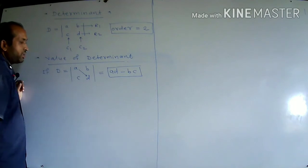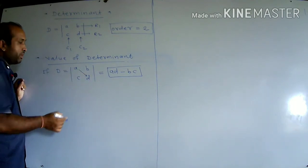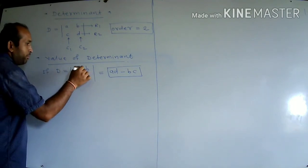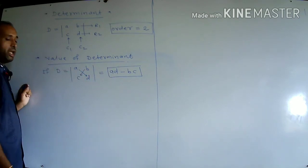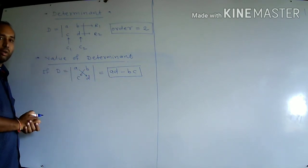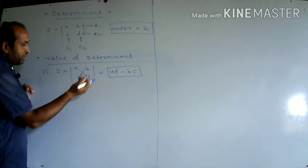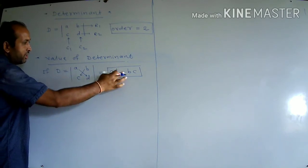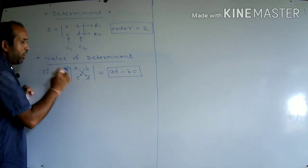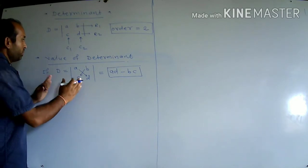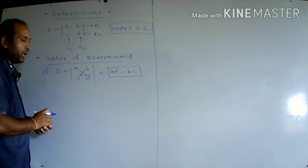Here, A and D are known as diagonal elements, and B and C are known as non-diagonal elements. Simply take the product of diagonal elements minus the product of non-diagonal elements — this is the value of any determinant.